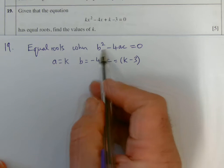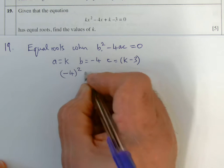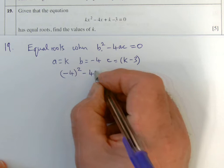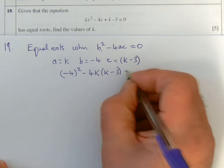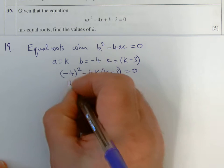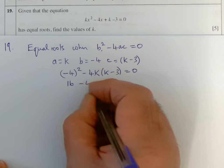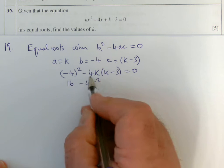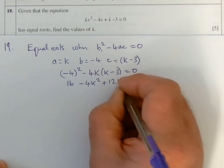So sub that into the discriminant formula. And I have minus 4 squared minus 4 times a which is k times c which is k minus 3. And I want that to equal naught. Square minus 4 is 16. Expand this bracket. Minus 4k times k is minus 4k squared. And minus 4k times minus 3 is plus 12k.